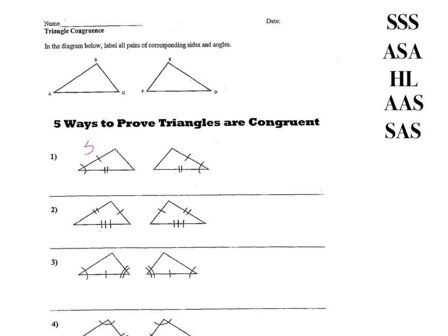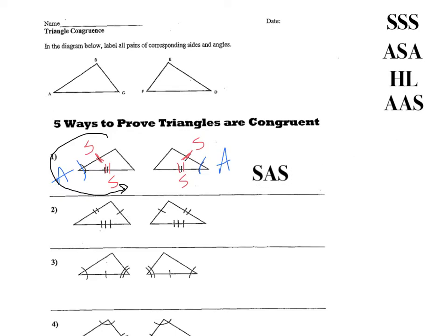In this first example, we have this side being congruent to this side — notice those tick marks. We also have an angle congruent to an angle, and then another side congruent to the other side in the other triangle. So we are going to follow this in order: side, angle, side. The correct answer for the first one is side, angle, side.